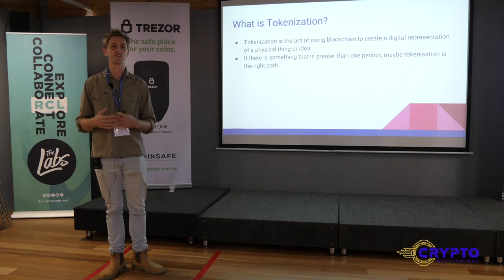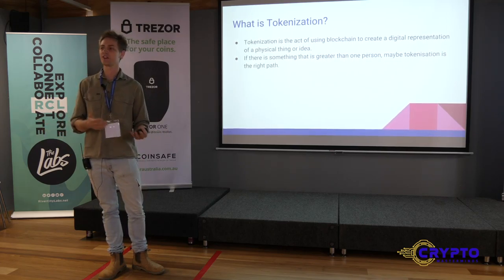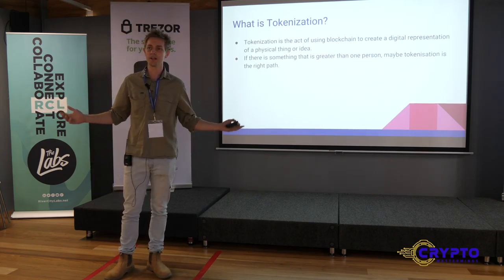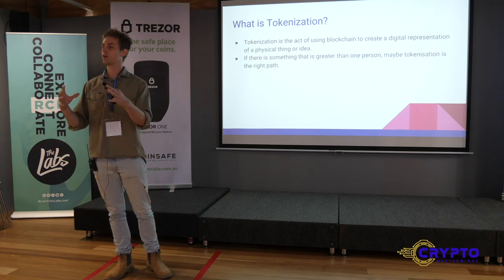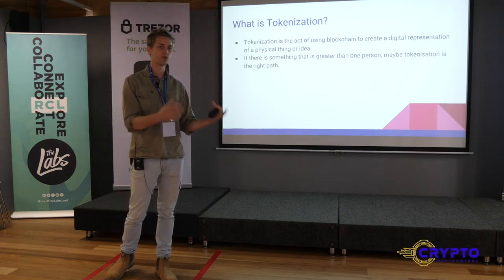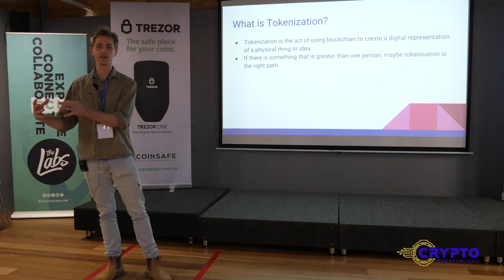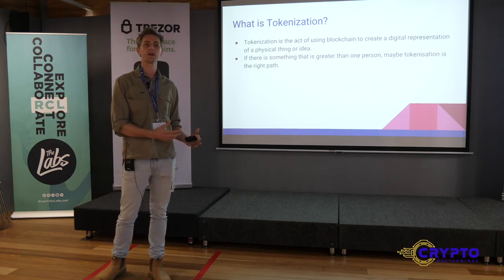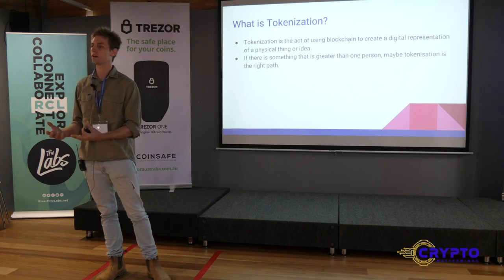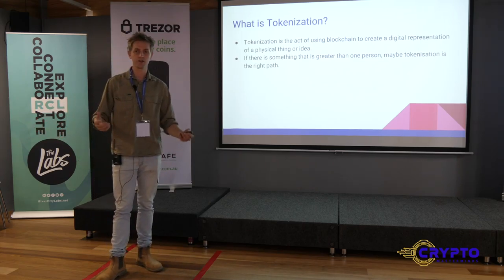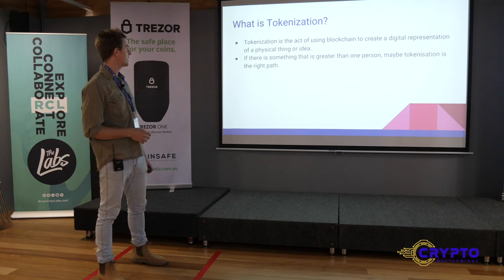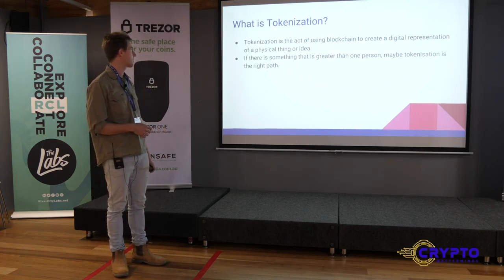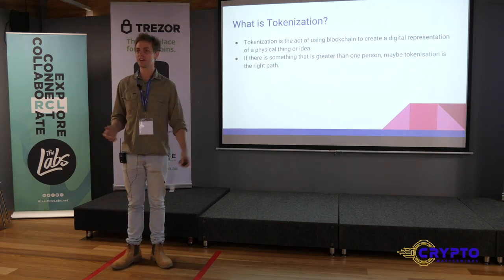There's going to be an explosion of welfare systems — even at ConsenSys there's a huge team discussing what universal basic income looks like. We might make decisions that prove completely wrong because people live differently everywhere. Tokenization is the act of using blockchain to create a digital representation of a physical idea or thing — that's pretty much it, as broad as it is. If there's something that is greater than one person, maybe tokenization is a good tool to use.